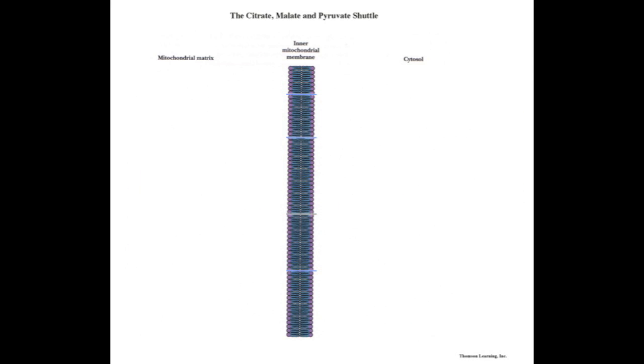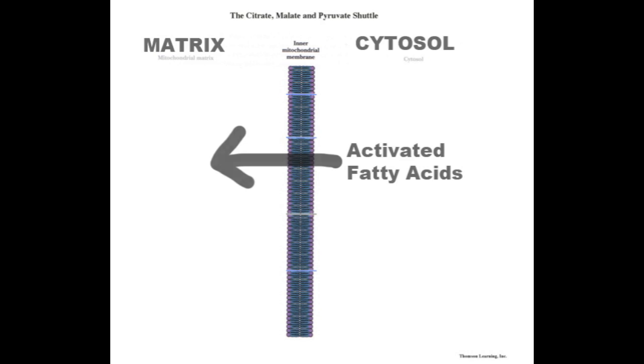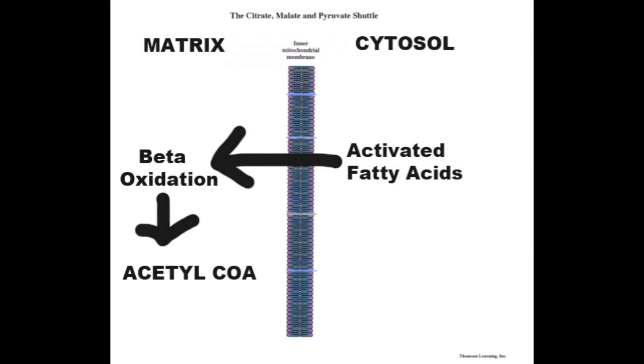Remember, some processes happen in the mitochondrial matrix and some processes happen in the cellular cytosol. In the last video, I talked about how fatty acids are activated and transported into the mitochondrial matrix through a carnitine transporter. In the mitochondrial matrix, the activated fatty acids undergo beta-oxidation. This produces some of the acetyl-CoA for the Krebs cycle.